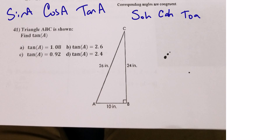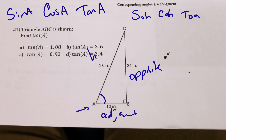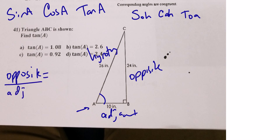Number 41 is about trig identities: sine, cosine, and tangent. The mnemonic is SOHCAHTOA. For angle A: the opposite side, adjacent side, and hypotenuse are identified. Sine = opposite/hypotenuse, cosine = adjacent/hypotenuse, tangent = opposite/adjacent. So tangent = opposite/adjacent = 24/10 = 2.4, which is answer D.